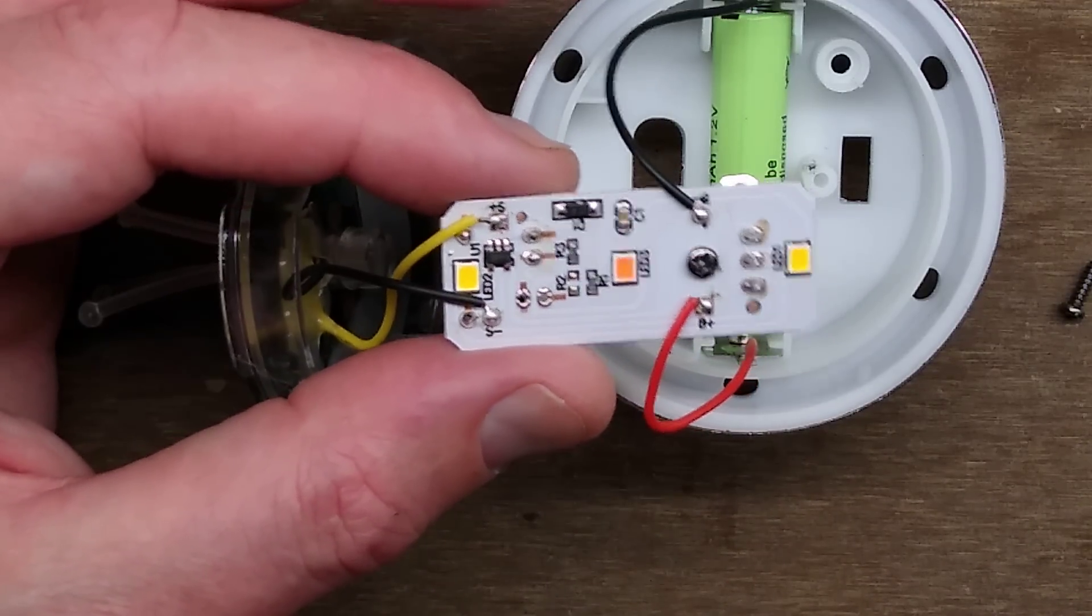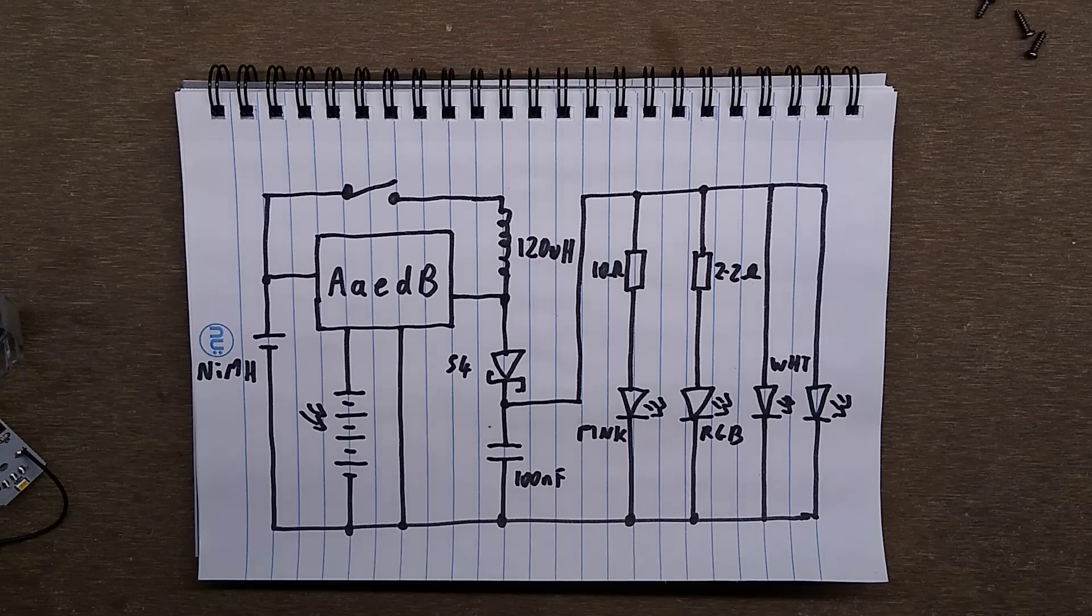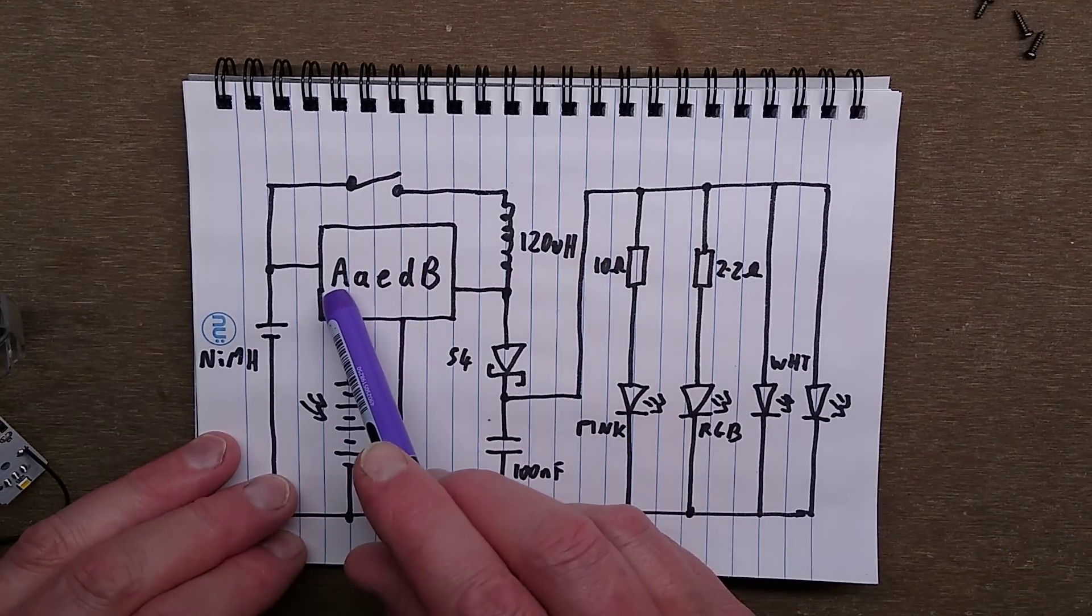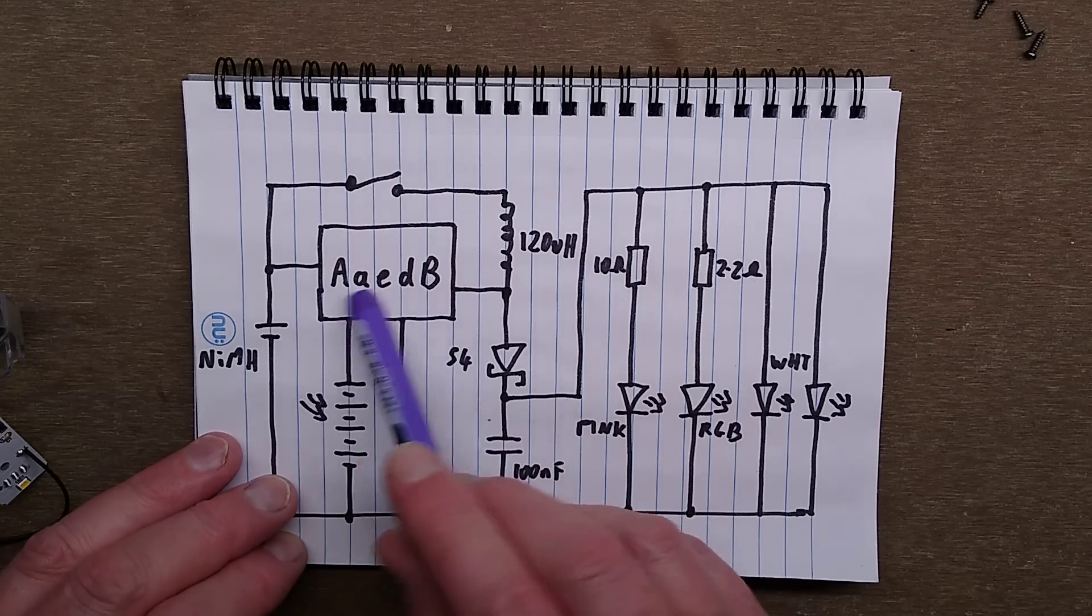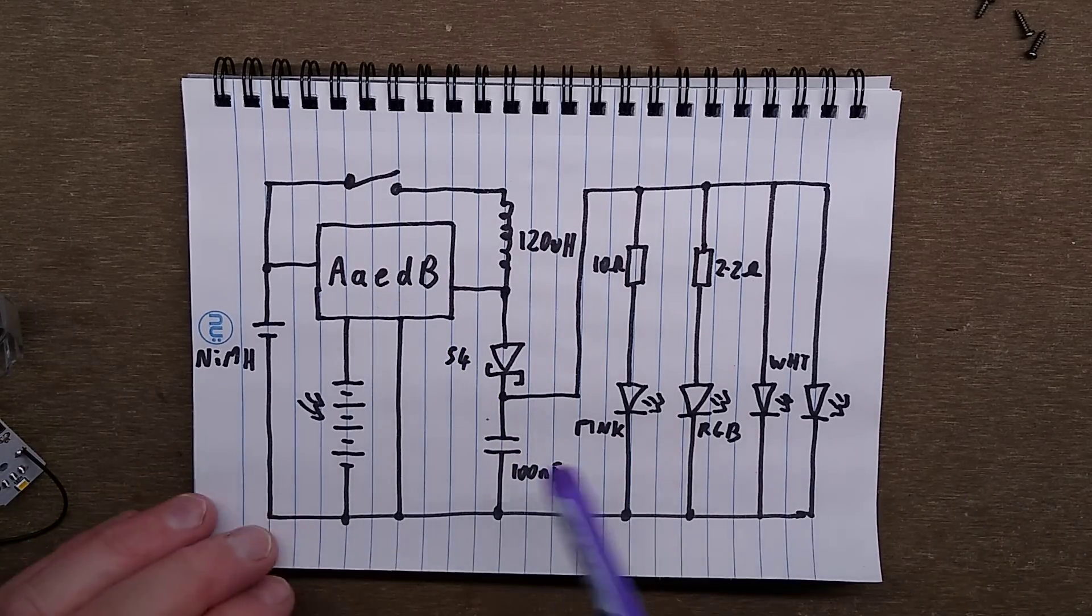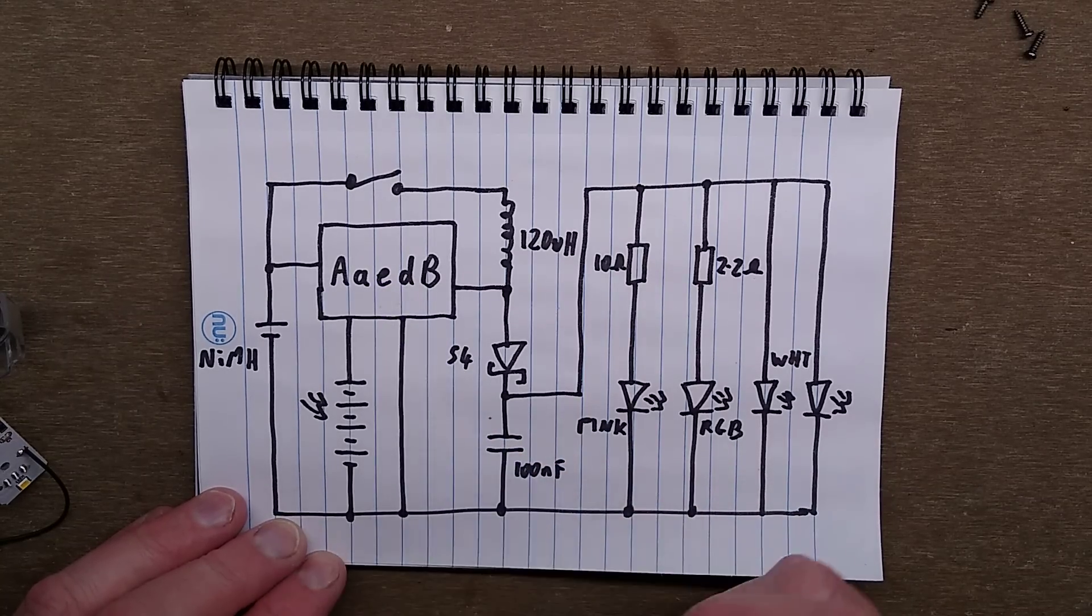The chip is apparently called capital A, small a, small e, small d, capital B, which I think is just a generic code. I'm not really sure if that's actually chip numbers. Suppose it makes sense to have capital letters and lowercase to increase the number of combinations.